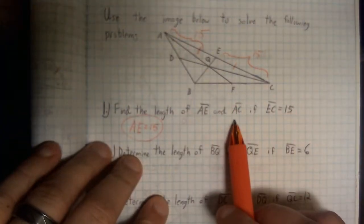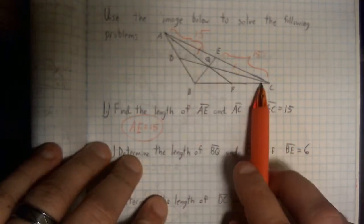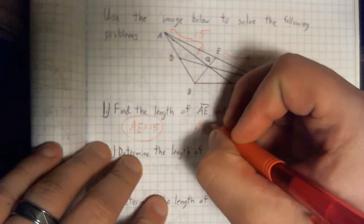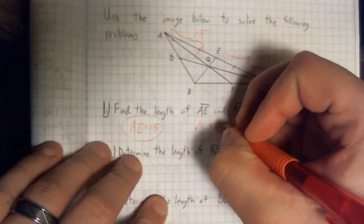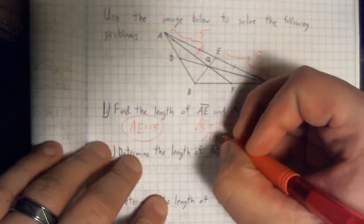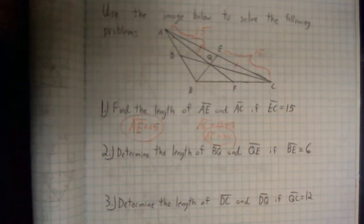Well, the next part says AC. AC is just a combination of AE and EC. So, if I add 15 and 15 together, I will get a length of 30 units.